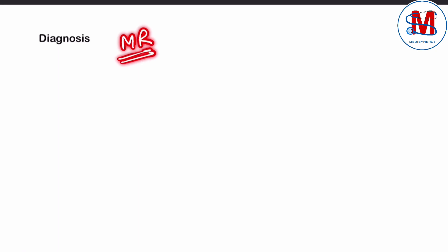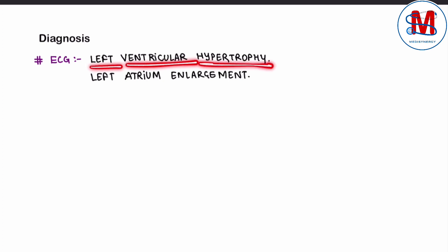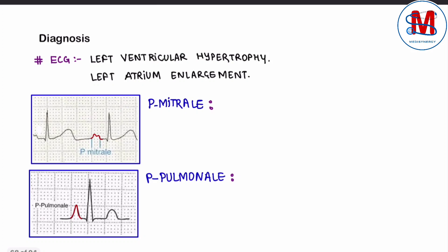Now let's discuss the diagnosis of mitral regurgitation. First, ECG findings: left ventricular hypertrophy, left atrial enlargement — and a characteristic finding of mitral regurgitation.